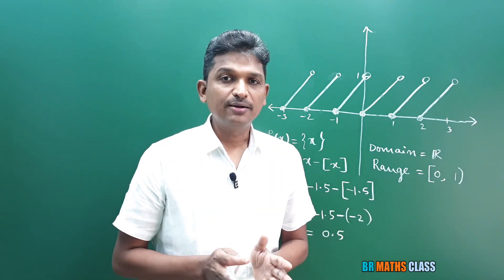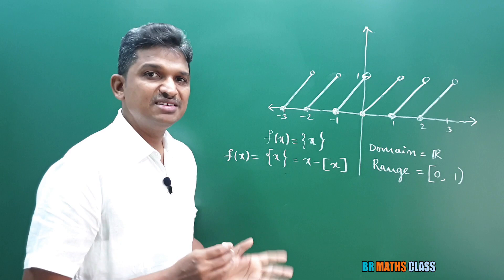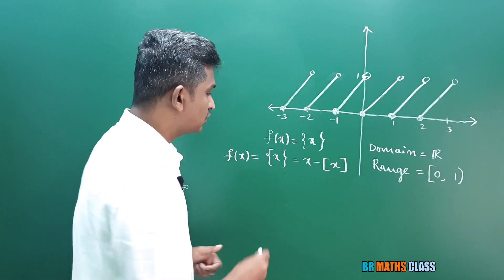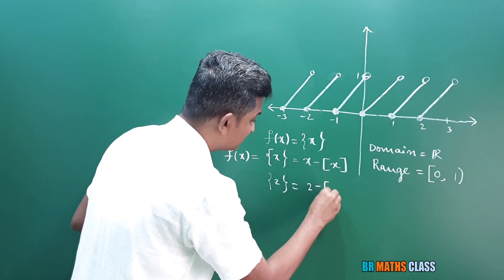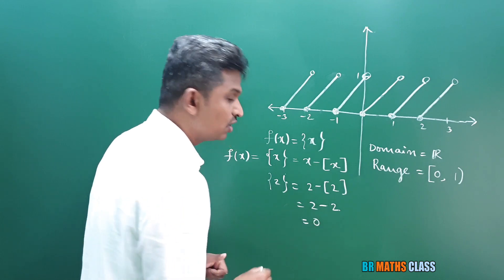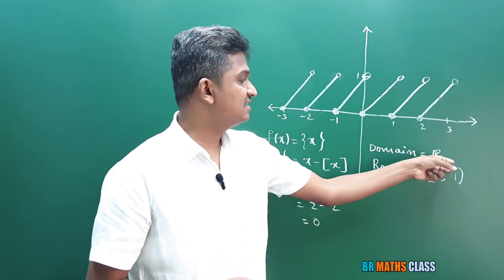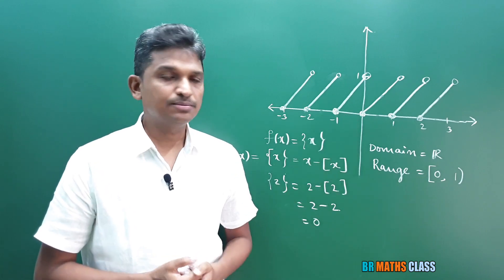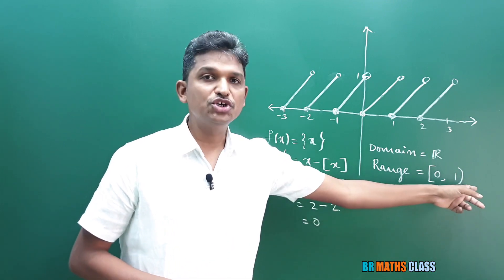The important thing: when does fractional part function give 0? Whenever you take x as an integer, its fractional part value is 0. For example, take x = 2. Fractional part of 2 = 2 minus ⌊2⌋ = 2 minus 2 = 0. So fractional part function gives 0 whenever x is an integer. Domain of fractional part function is all real numbers, and it always gives a number in between 0 and 1, where 0 is included and 1 is not included.